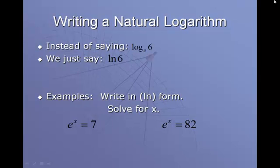Writing a natural logarithm: Instead of saying log base e of 6, we just say ln of 6. LN 6 means natural log of 6. If I was going to evaluate that in my calculator, I'd push the LN button and push 6. For example, if I was going to write e to the power of x equals 7 in natural log form, my base is e, so I wouldn't say log base e of 7. I would say natural log or ln of 7 equals x.